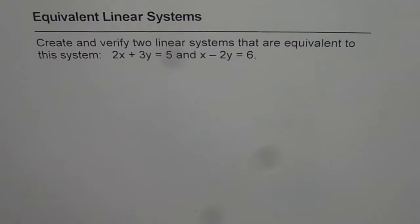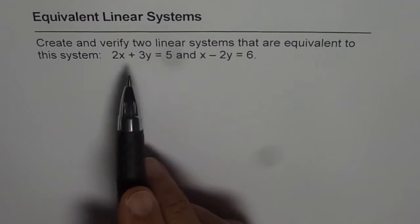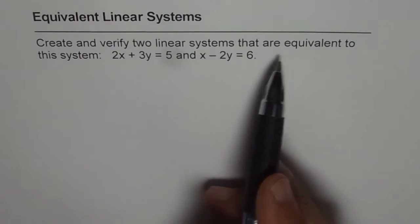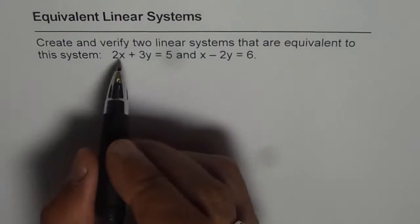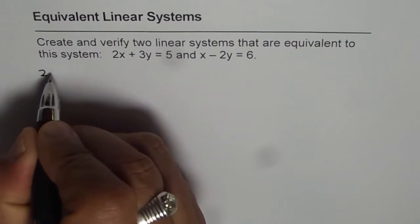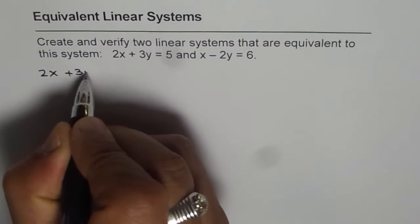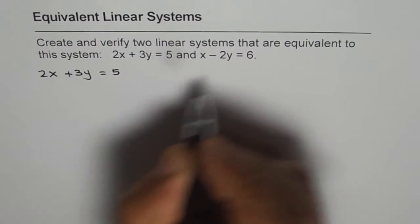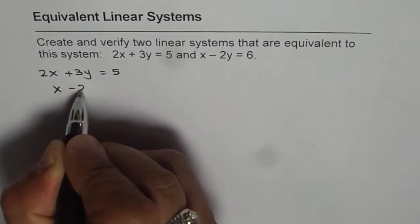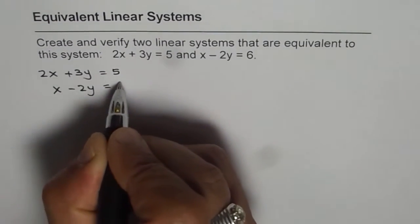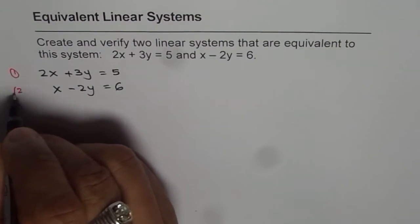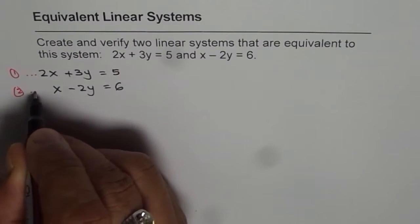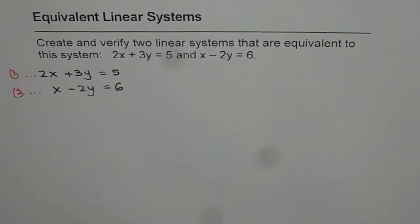Equivalent linear systems. Create and verify two linear systems that are equivalent to this system. It has two different equations. The first one is 2x plus 3y equals 5 and the second one is x minus 2y equals 6. Let us number these equations as 1 and 2. These are the given equations. We need to create equivalent linear systems.